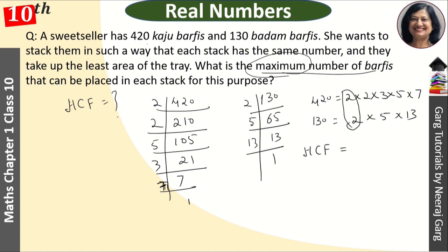This is 2 common and this is 5 common. So 2 into 5 means the answer is 10.